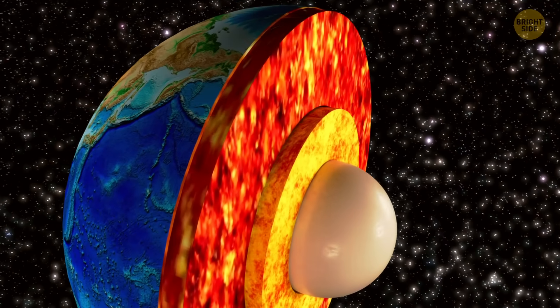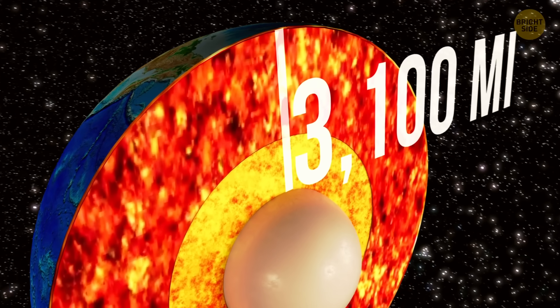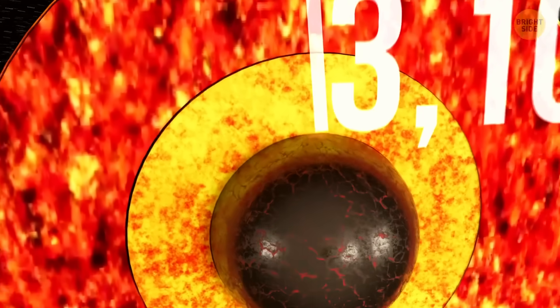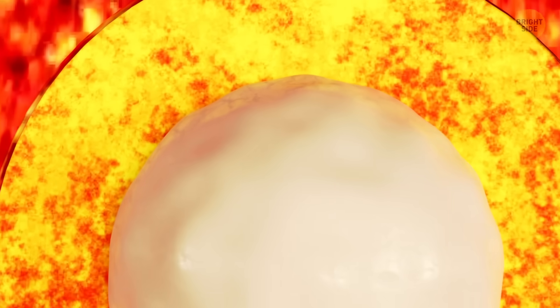The inner core of our planet, located about 3,100 miles below the surface, is traditionally described as a solid ball of iron and nickel. However, new data shows that its outer layer may be more malleable than expected.